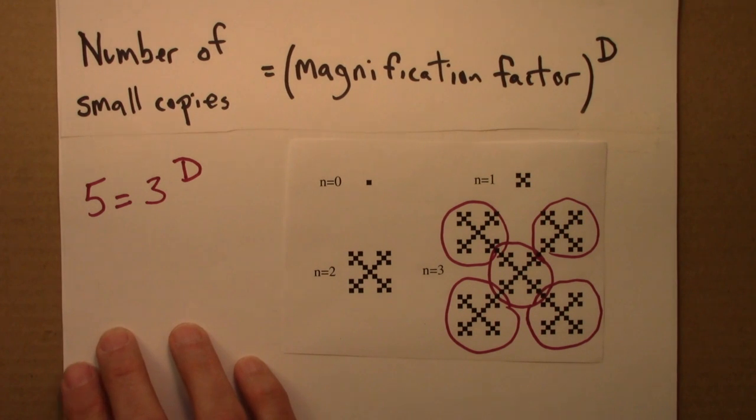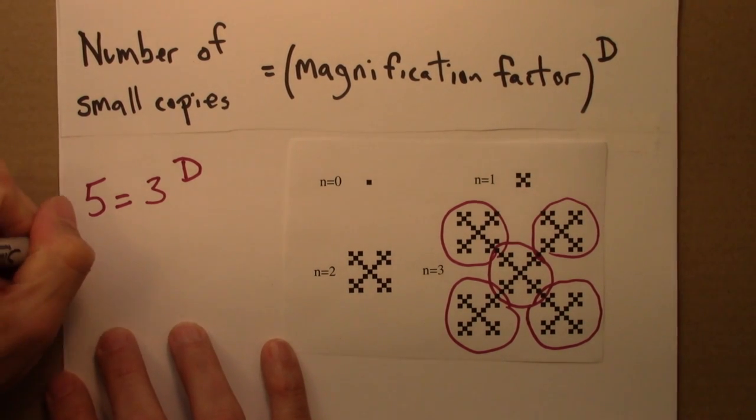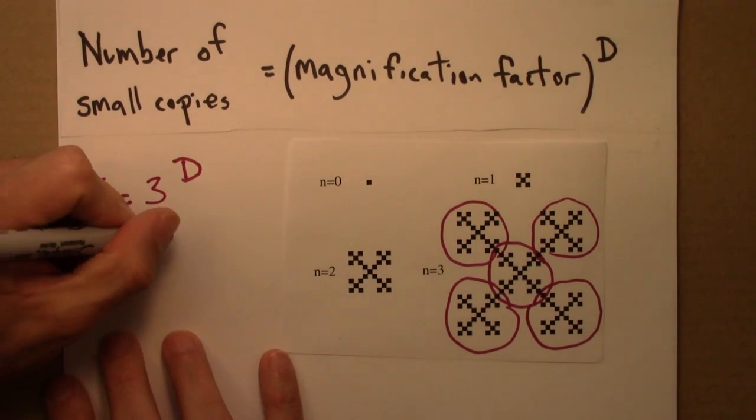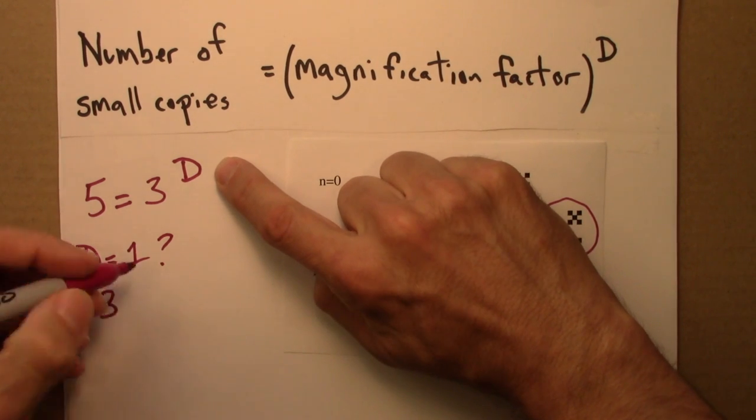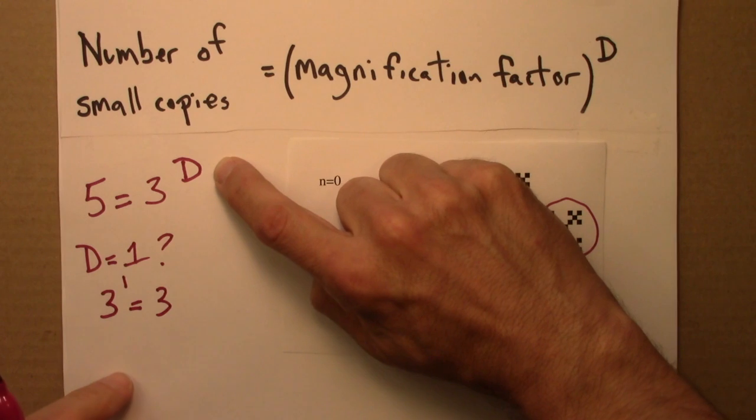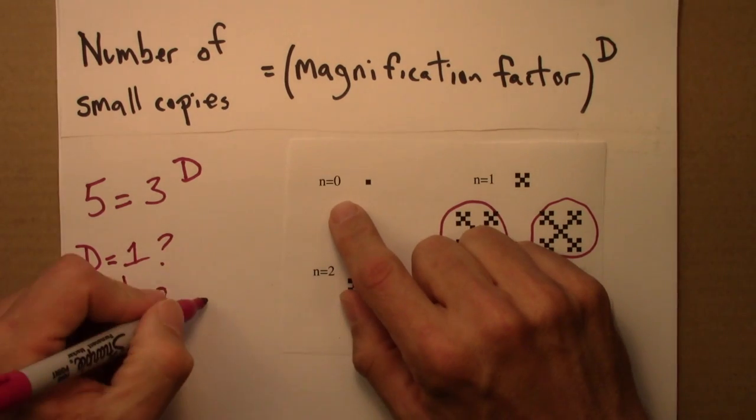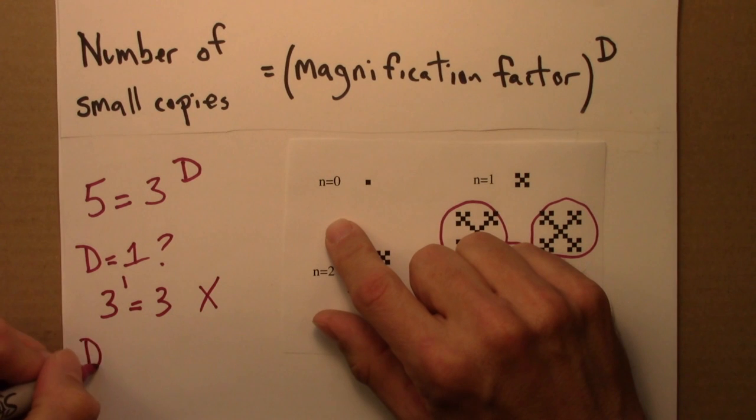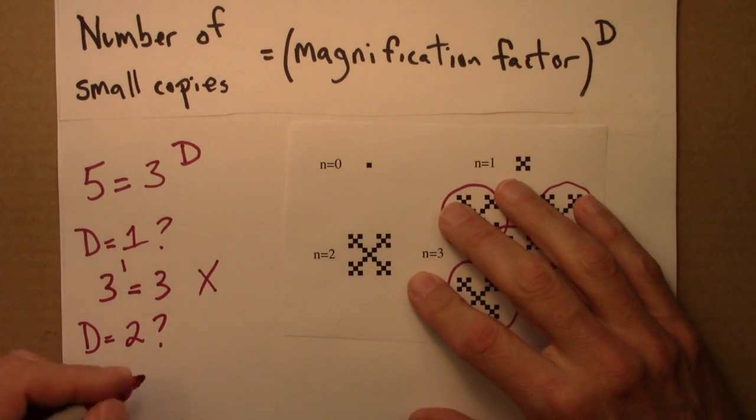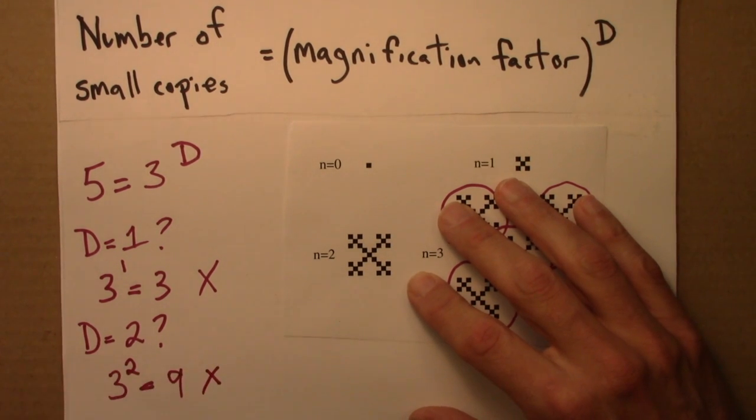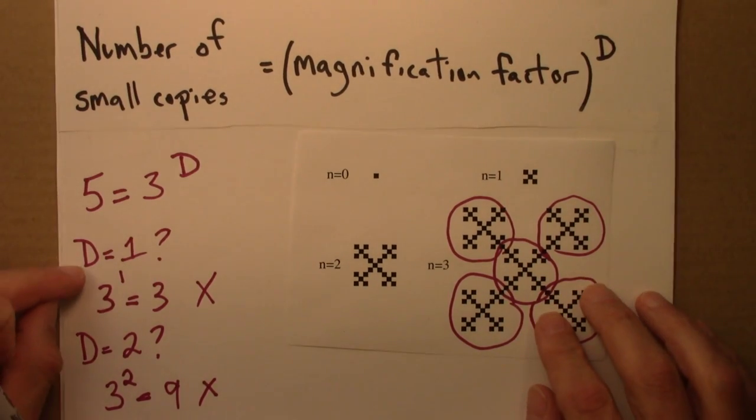Now the question is, what's the dimension d? Could the dimension be one? Let's try. I'll plug it in. Three to the one is three. That's not five. Could the dimension be two? Three squared is three times three, that's nine. That's too big. So this object does not have a dimension of one. It does not have a dimension of two.